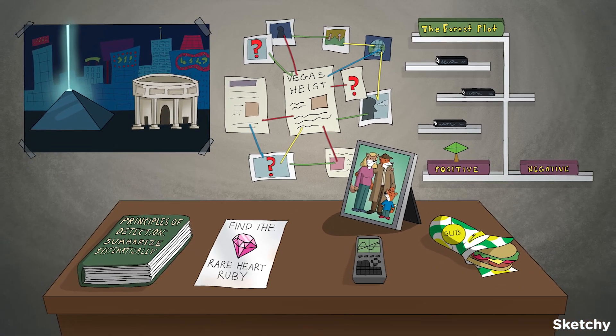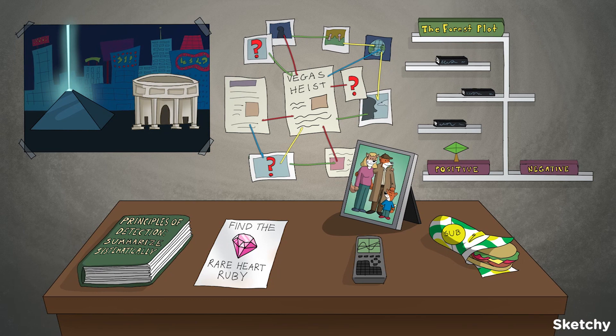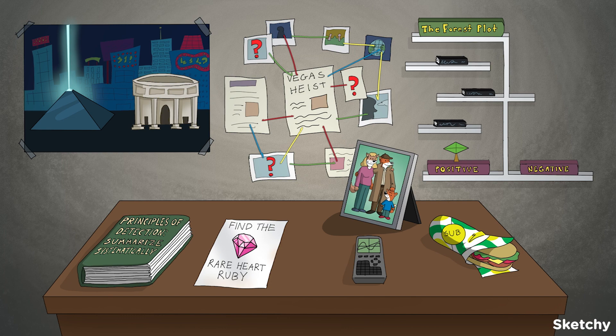Well, thanks for helping StatLock build his evidence board and crack this case. Congrats, you've now climbed to the top of the pyramid in epidemiology. Systematically and meta-analytically speaking, of course. Remember, systematic reviews are qualitative assessments of the evidence base, while meta-analyses quantify the strength of the evidence and arrive at an aggregate measure of effect. You've got this on lock. StatLock!